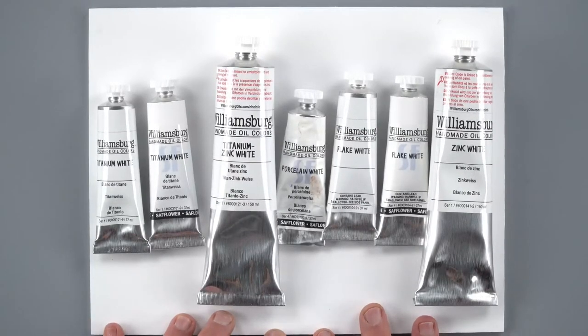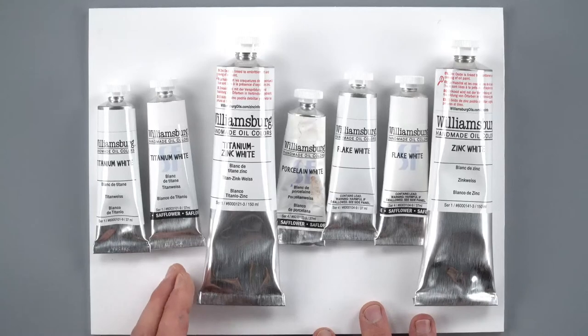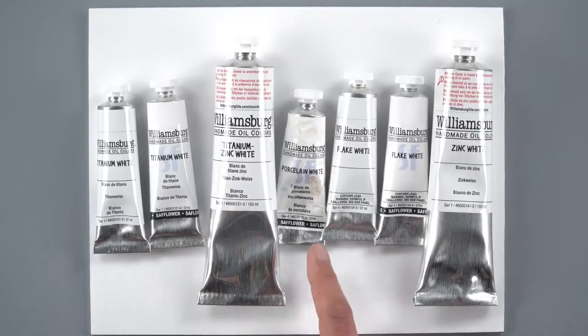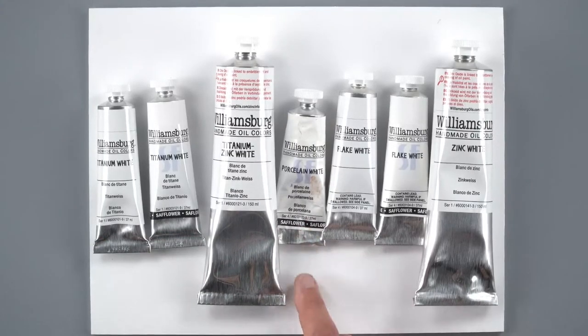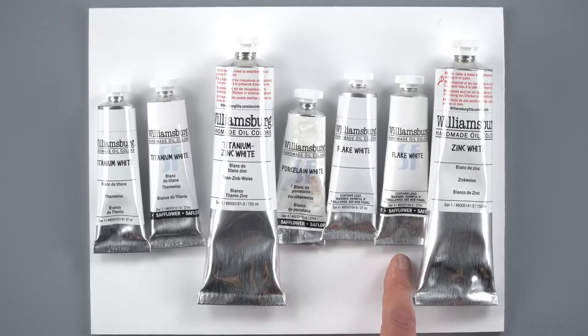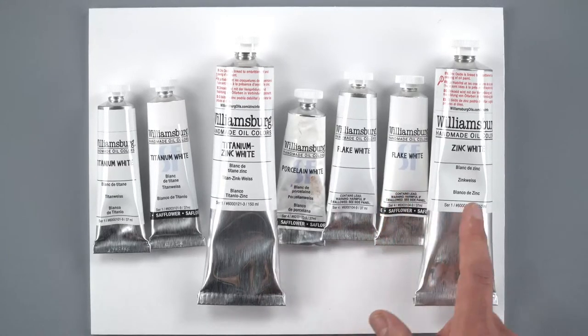We're going to look at titanium white, safflower titanium white, titanium zinc white - this is a blended color, porcelain white - this is only ground in safflower oil, flake white, flake white in safflower, and then zinc white.